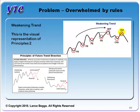The weakening trend section of the setups poster shows a visual representation of principle two. If your analysis identifies a weakening trend and you're not sure what to anticipate for future price action, look to your setups poster. Where you see the visual representation, be reminded to watch for a complex pullback and then continuation of the trend.